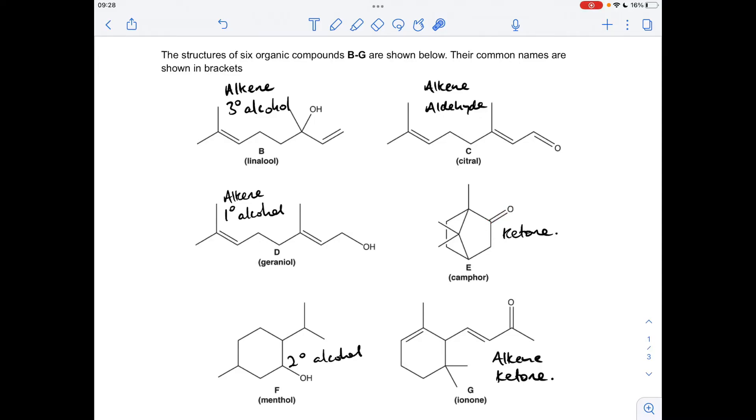E just has the ketone functional group. F is a secondary alcohol. And G, alkene and ketone.